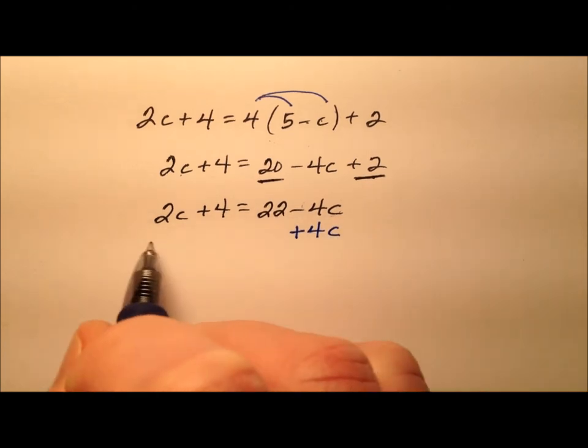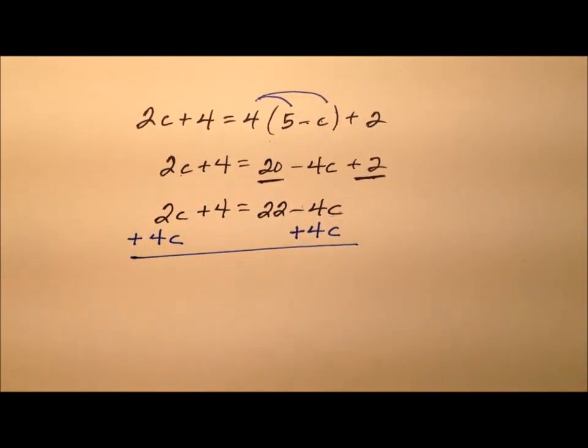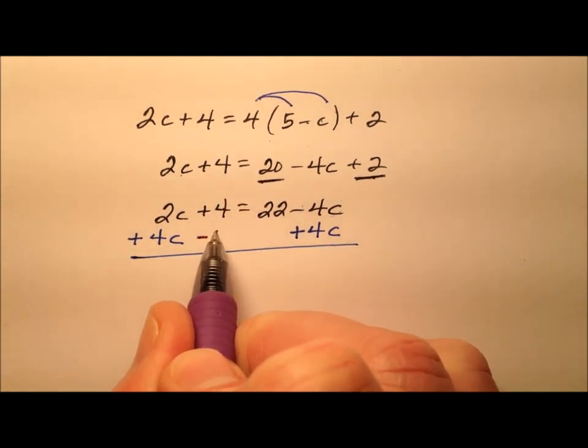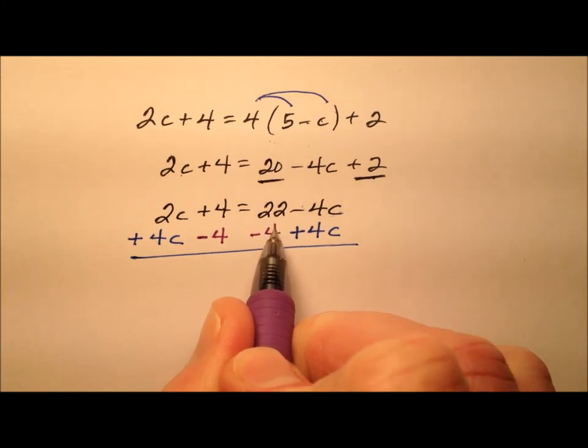So we're going to add 4c to both sides. And while we're at it, let's go ahead and deal with the constants. So this is a plus 4, so let's go ahead and do the inverse operation, which is minus 4.